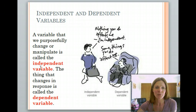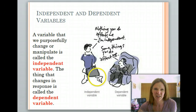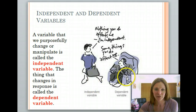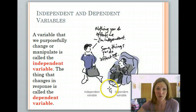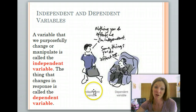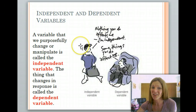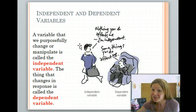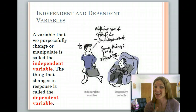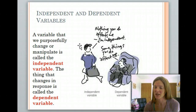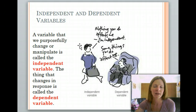I'm going to read you the definition, and I always like to put in funny little pictures — this looks like a husband and a wife. The independent variable says 'nothing you do affects me, I'm independent,' and the dependent variable says 'some things you do affect me,' kind of annoyed.